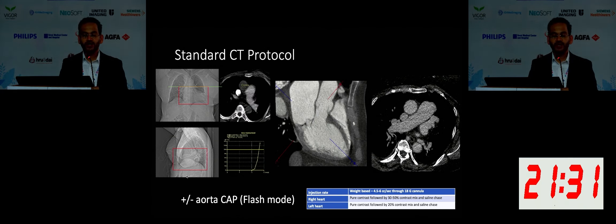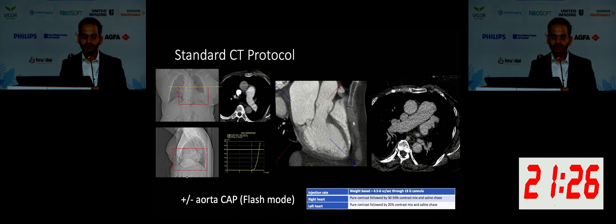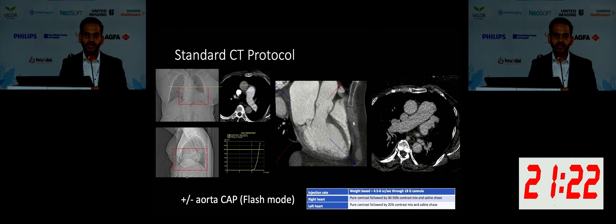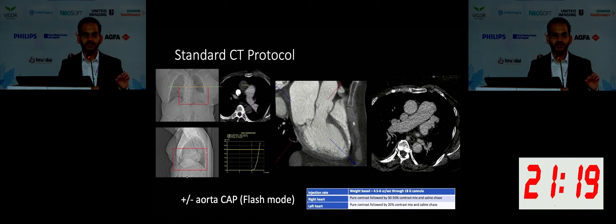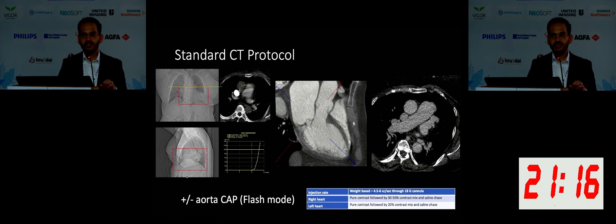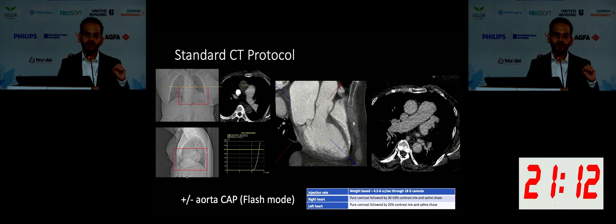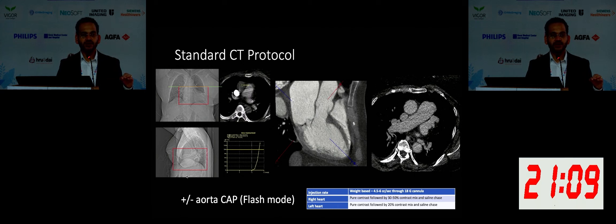We do acquire non-contrast images for all valves. Following the non-contrast image, we do bolus-tracked CTA. We have a third-generation dual-source scanner. That bolus tracking is typically placed at the level of the aorta. For patients who have congenital heart disease, sometimes the techs get confused about where to put the ROI because they can't identify the ascending aorta.